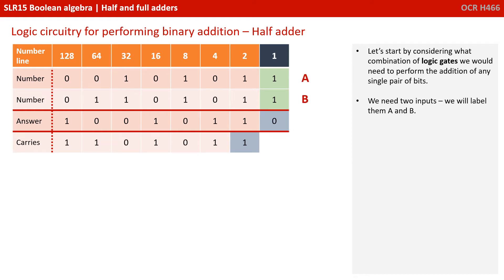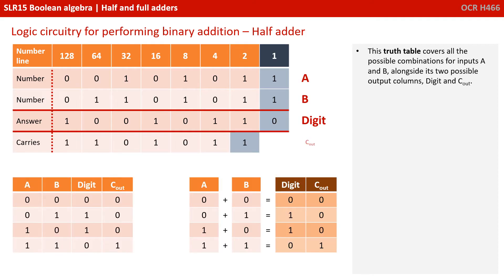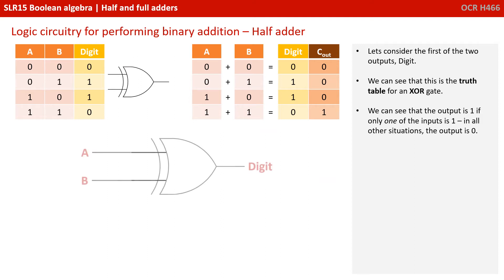We need two inputs, we'll label those A and B. We have produced a sum as one of our outputs, so we'll label this 'digit'. We've also produced a carry bit to feed into the subsequent addition, so we're going to label this Cout. This truth table covers all the possible combinations for inputs A and B, alongside its two possible output columns: digit and Cout. The digit output is the truth table for an exclusive OR gate, an XOR. We can see that the output is 1 if only one of the inputs is 1. In all other situations the output is 0.